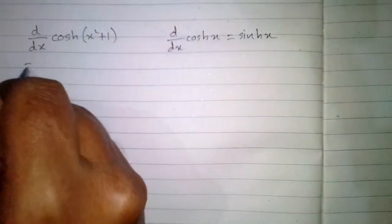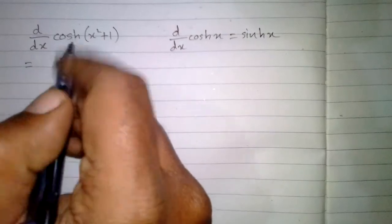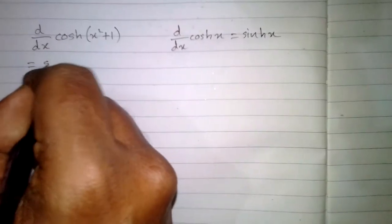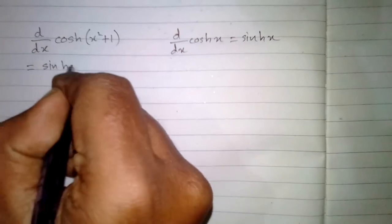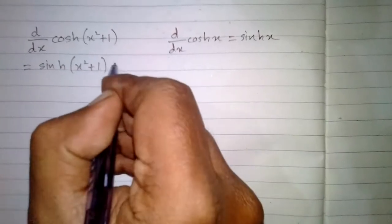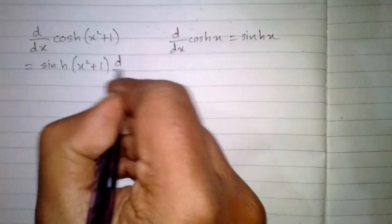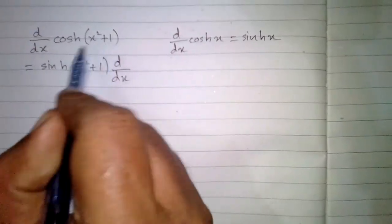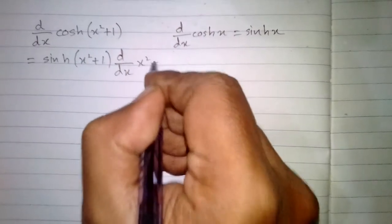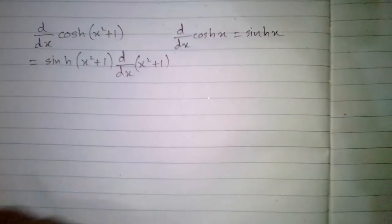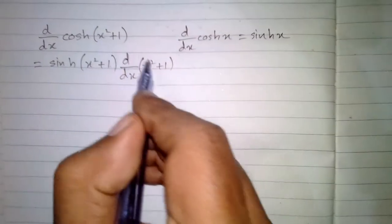So the derivative of hyperbolic cos(x² + 1) is hyperbolic sin(x² + 1), multiplied by the derivative of what is inside the bracket. So we will take the derivative of x² + 1.